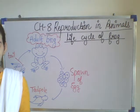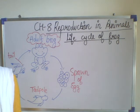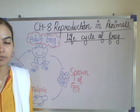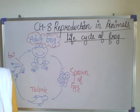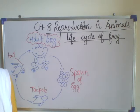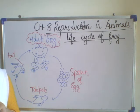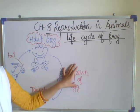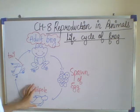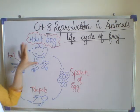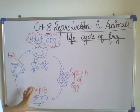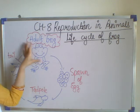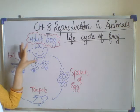Students, take out page number 68 of your science book. The life cycle of a frog also shows metamorphosis. We have discussed this in the life cycle of a butterfly. Metamorphosis means the changing of a young one — like the tadpole — into an adult. When the baby changes into a grown adult, it is called metamorphosis.